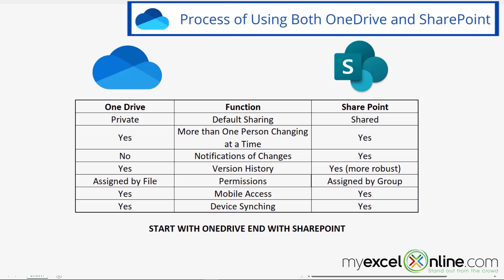The general rule for OneDrive and SharePoint is that you start with a private file inside OneDrive. You work on that file and get it to be exactly what you want before sharing it with everyone else. Once you've worked out all the nuances, you upload it to SharePoint so everyone can access it and start making the required changes. So it's not always either/or — a lot of times it's: start in OneDrive, end in SharePoint.